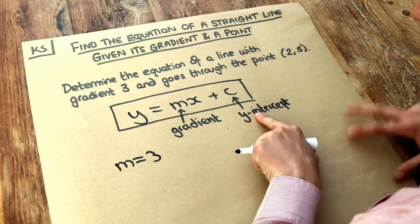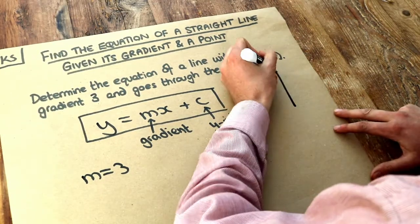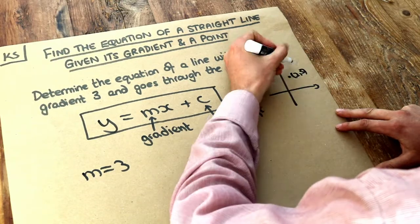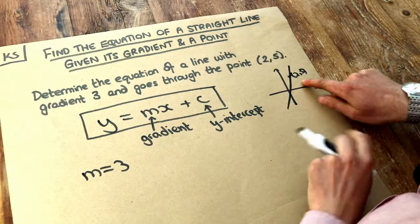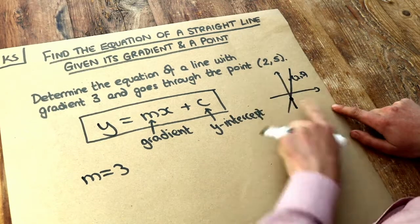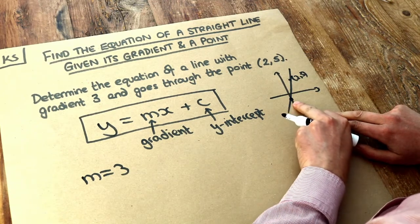But we don't know the y-intercept. You might think the y-intercept is 5, but if I was to plot the point (2,5), we can see that the 5 there is not the y-intercept. The y-intercept is somewhere down here. It's not immediately obvious what that y-intercept is going to be.